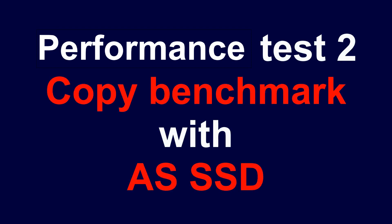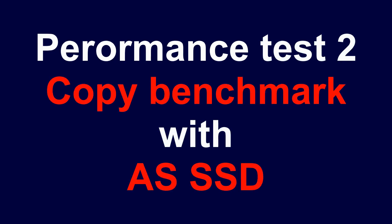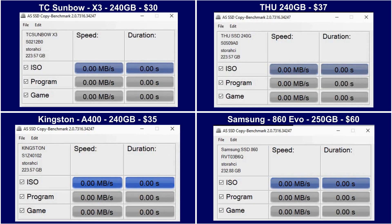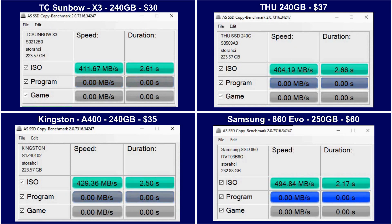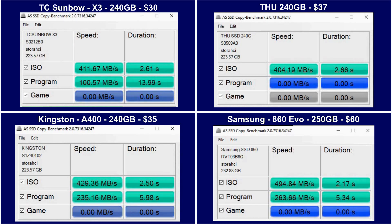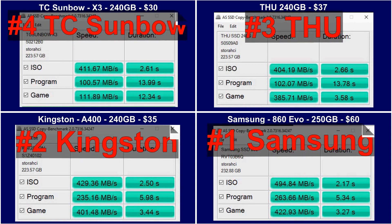The fourth test is a copy benchmark, also using AS SSD. This shows how fast the disk is when you copy files to it. The first file type is the ISO, which is a large sequential file. Then the program file, which is small chunks of files. And then the gaming file, which is a mix of the two.